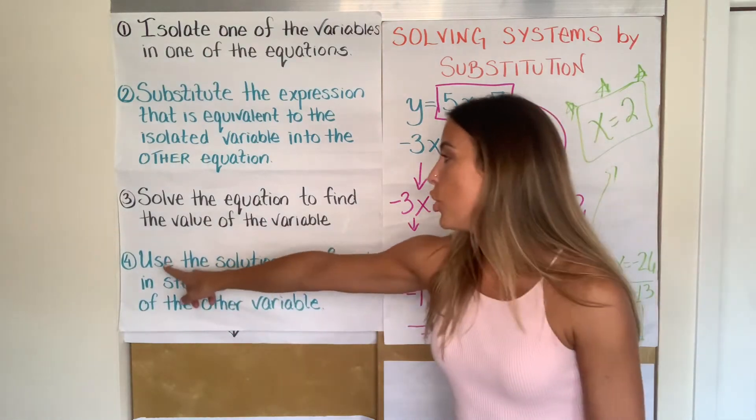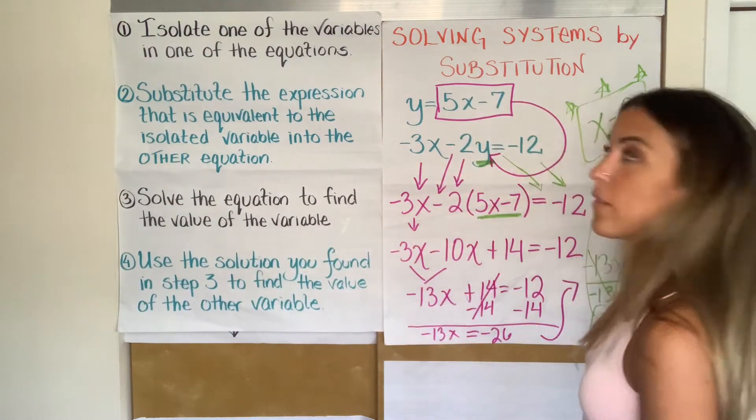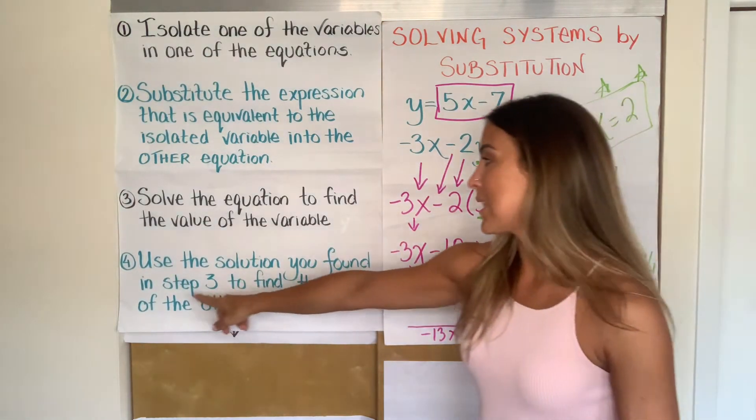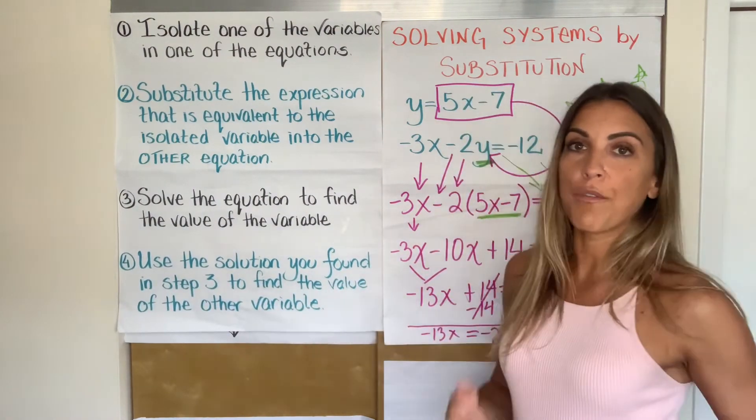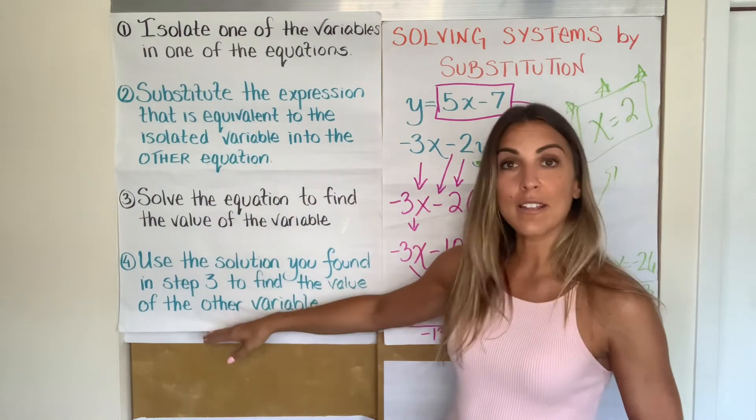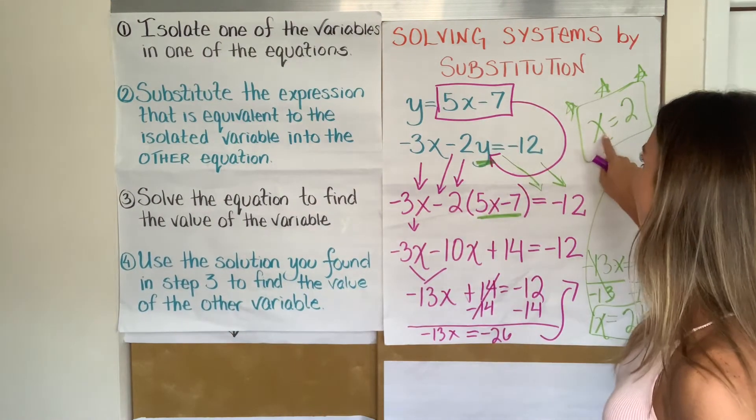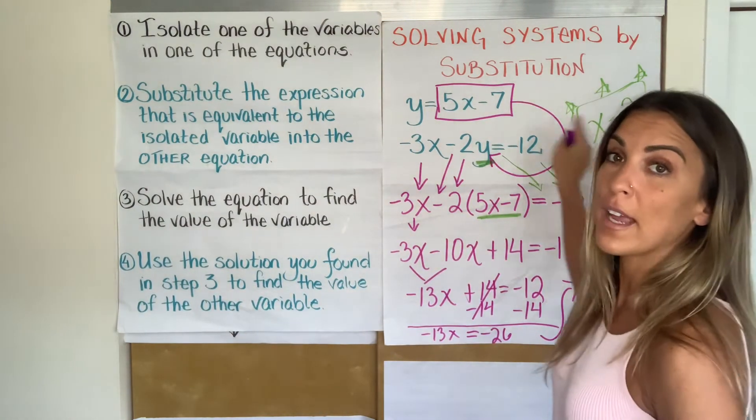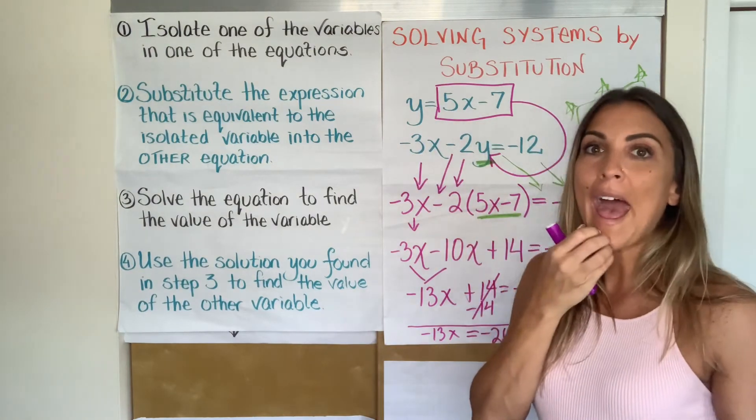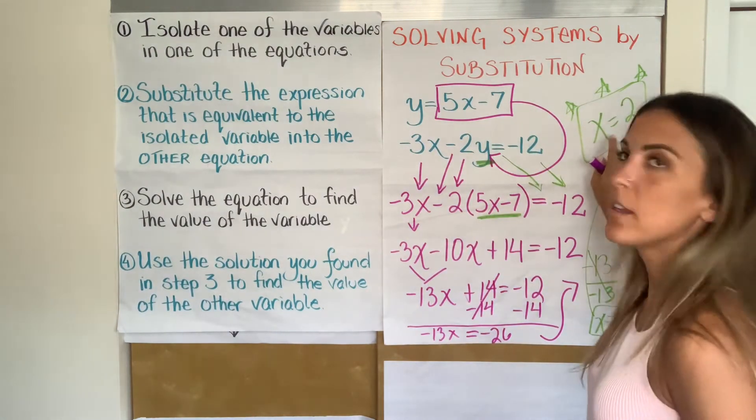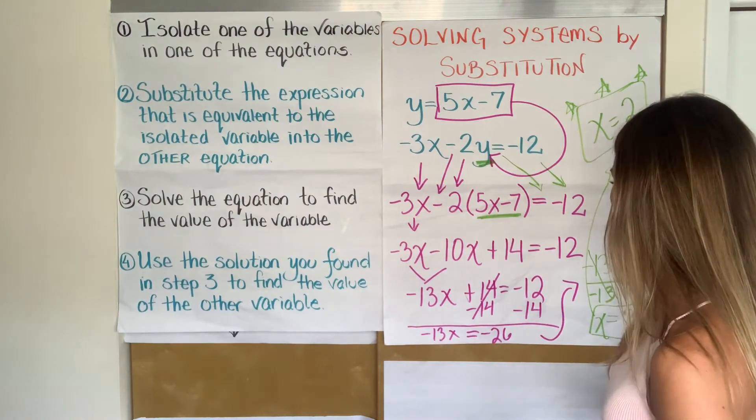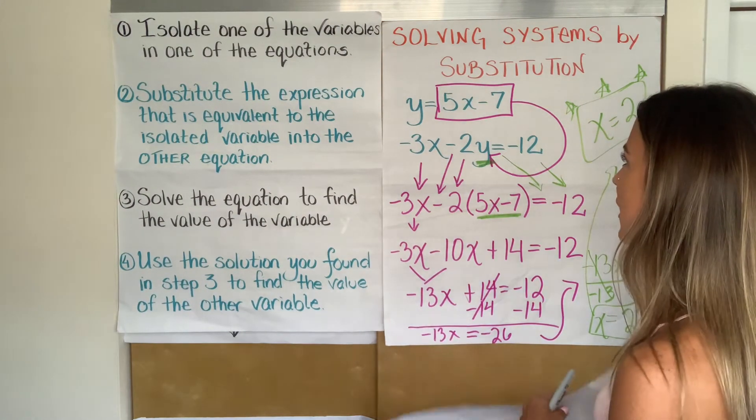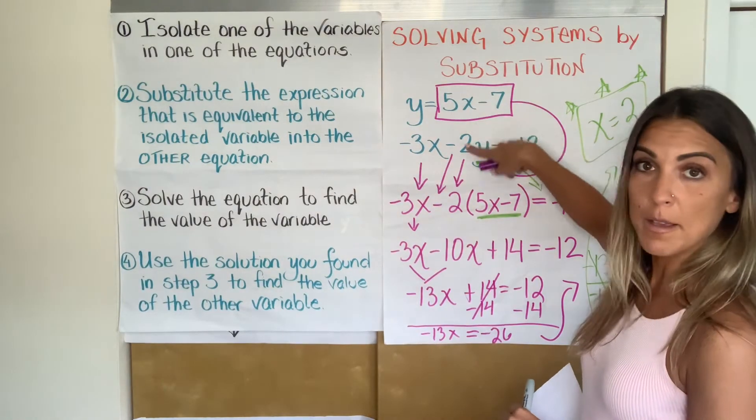Step four, use the solution you found in step three to find the value of the other variable. So depending on what variable you solve for first, now we're going to solve for the other one. So we've already solved for X, which means we still need to find Y. Think about how we might use this solution to find Y. Think about it. See if you can get it before I say it.